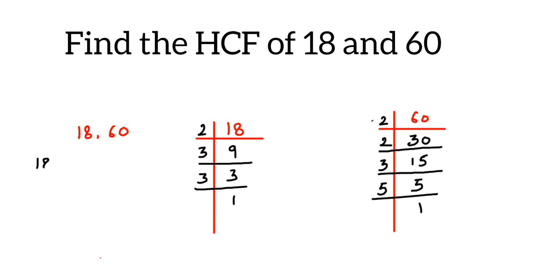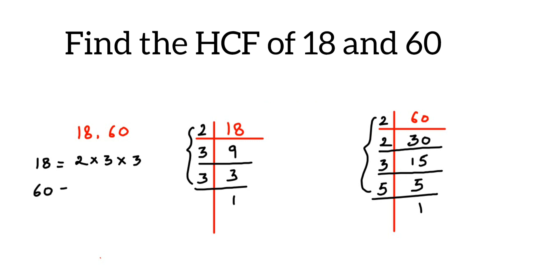Now write down all the factors for each number. 18 can be written as 2 into 3 into 3 — we're expressing each number in terms of its prime factors. And 60 can be written as 2 into 2 into 2 into 3 into 5.